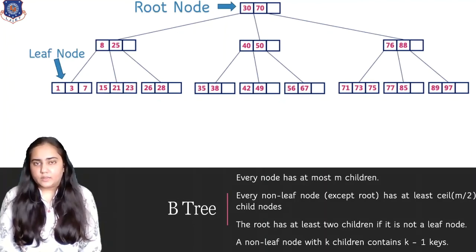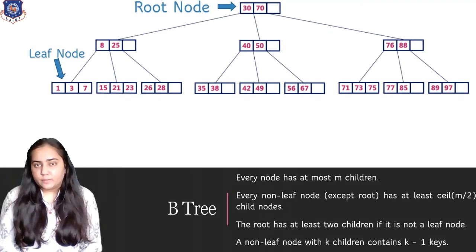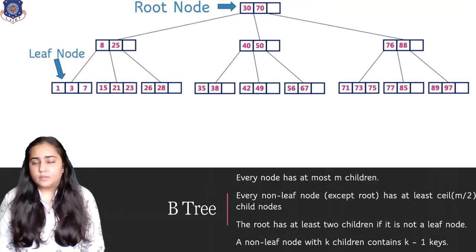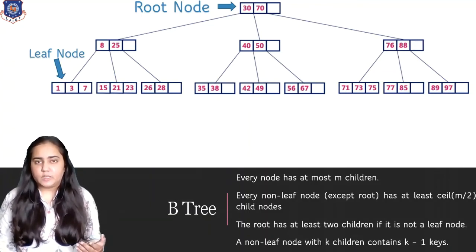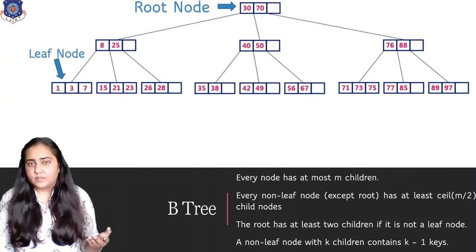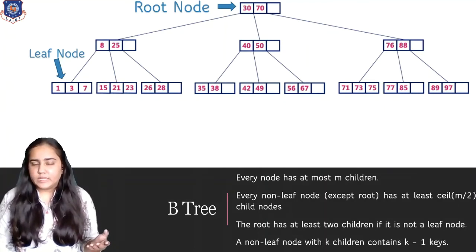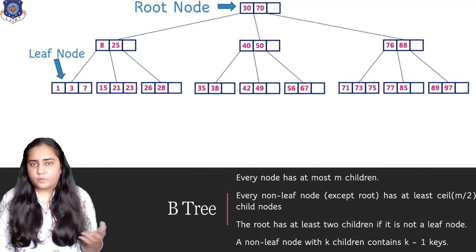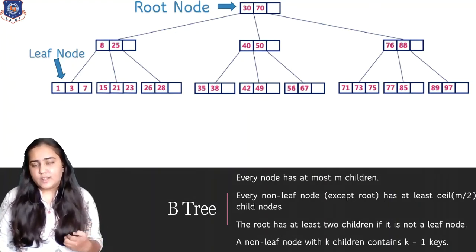I'm going to start from the root node and start comparing. I can see that there is 30 right on top of the root node. If I compare 67 with 30, then 67 is greater than 30. So I need to compare it with the next one, which is 70. So 67 is less than 70. Notice how all the keys present in all the nodes are in sorted order. This helps us to perform our comparisons. Now 67 is lying between 30 and 70. So I'm not going to look on the left-hand side of the root node or the right-hand side. I'm going to look in the middle. So this itself eliminates a lot of possibilities.